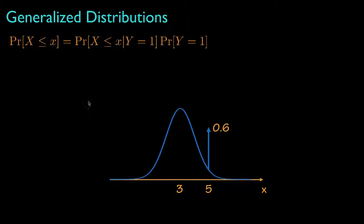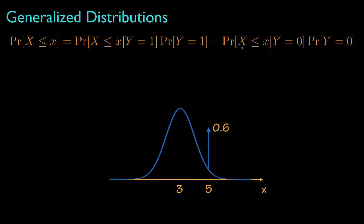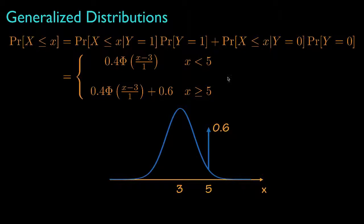In a similar manner, the probability that the random variable is less than or equal to some value x is the conditional probability that the random variable is less than or equal to x given y equals 1, times the probability that y equals 1, plus the conditional probability given y equals 0 times the probability that y equals 0. When x is less than 5, this is simply the cumulative distribution function for the Gaussian random variable times 0.4, evaluated using the standard normal CDF phi. When x is greater than or equal to 5, we need to include the probability associated with the Dirac delta function. The corresponding probability that the random variable is greater than x would be one minus this probability.